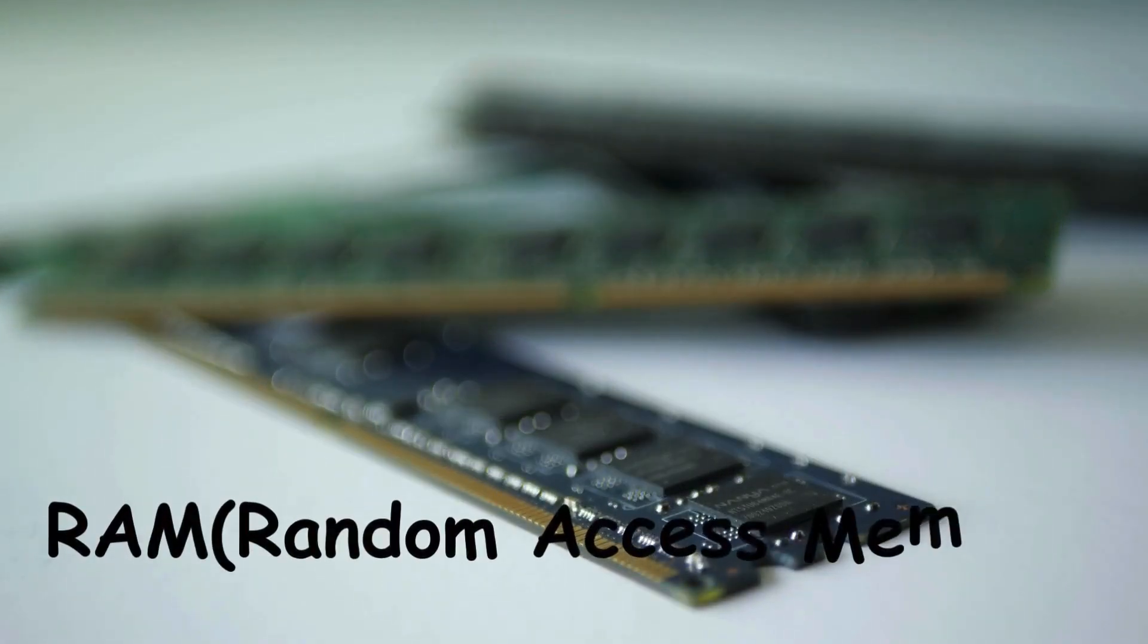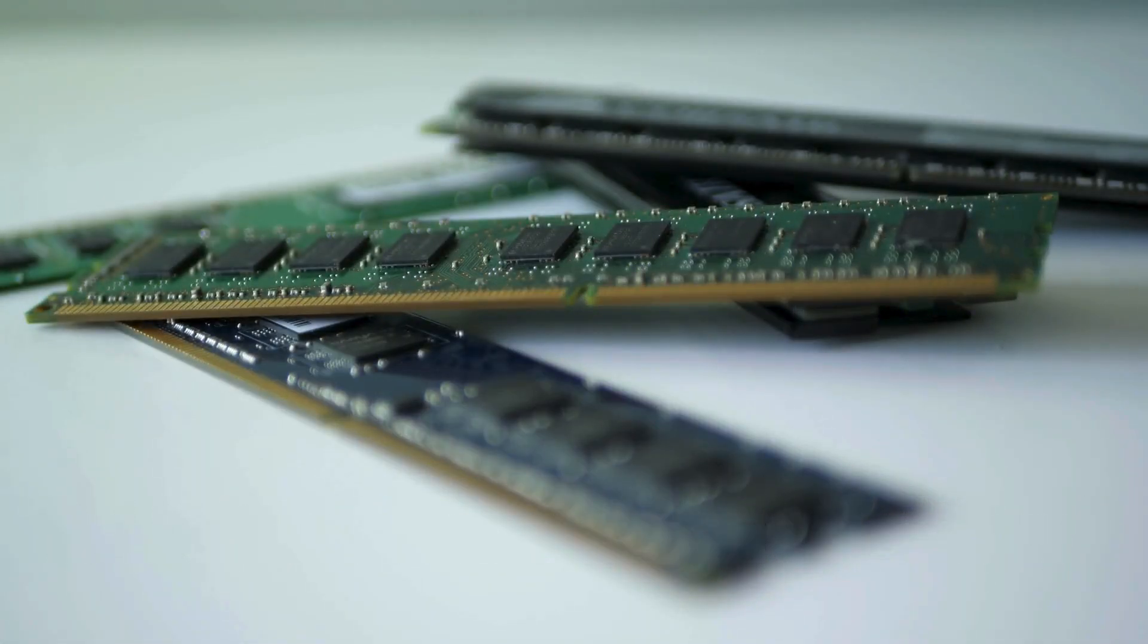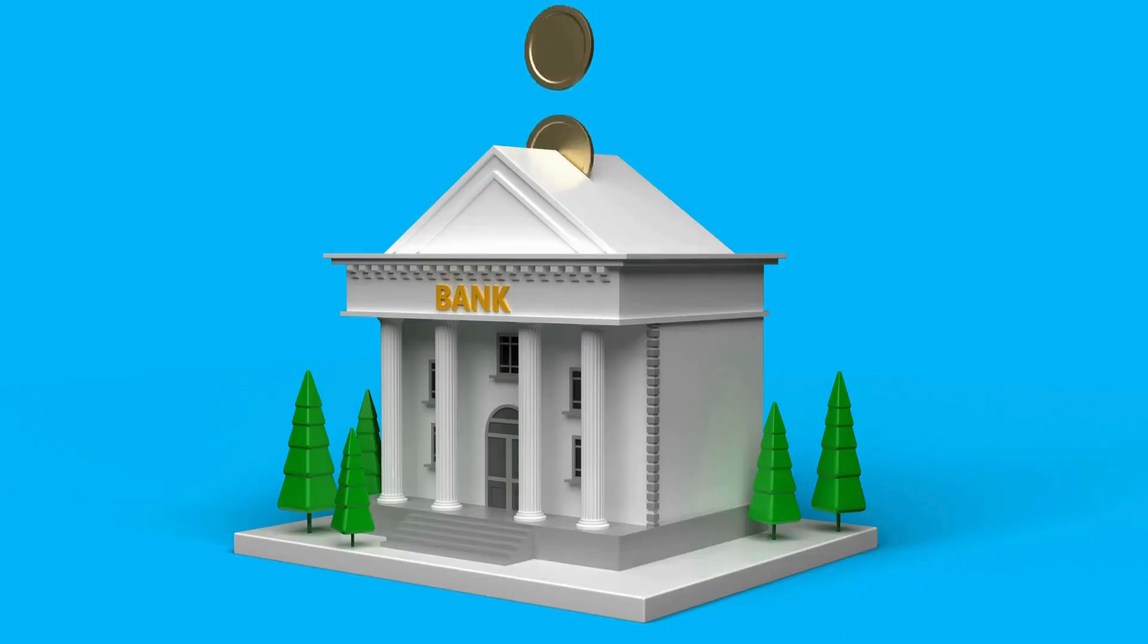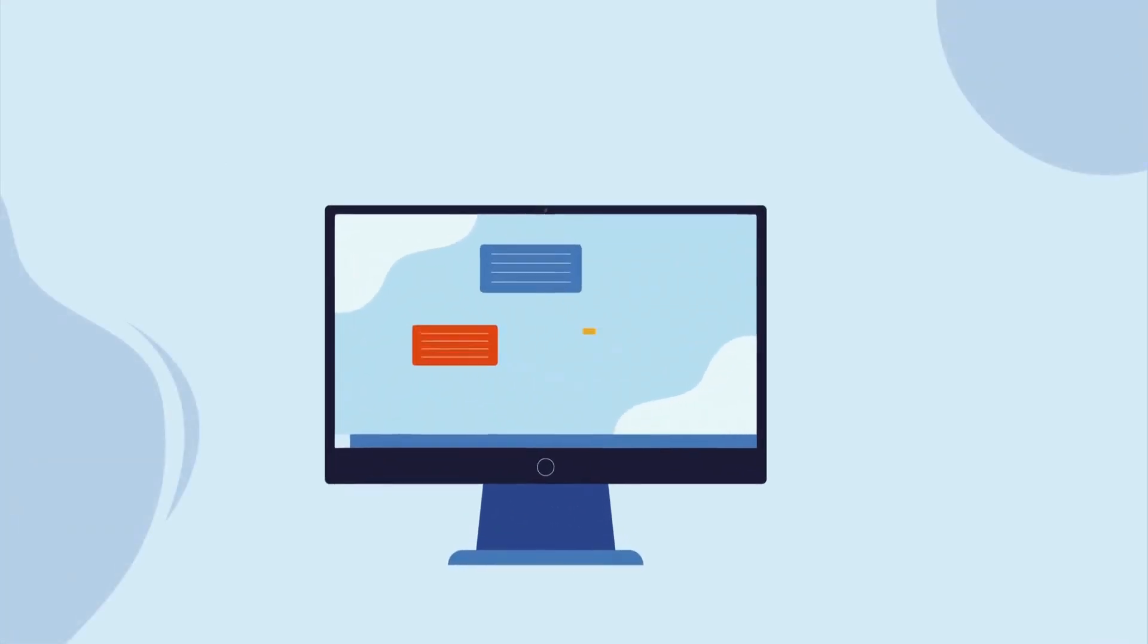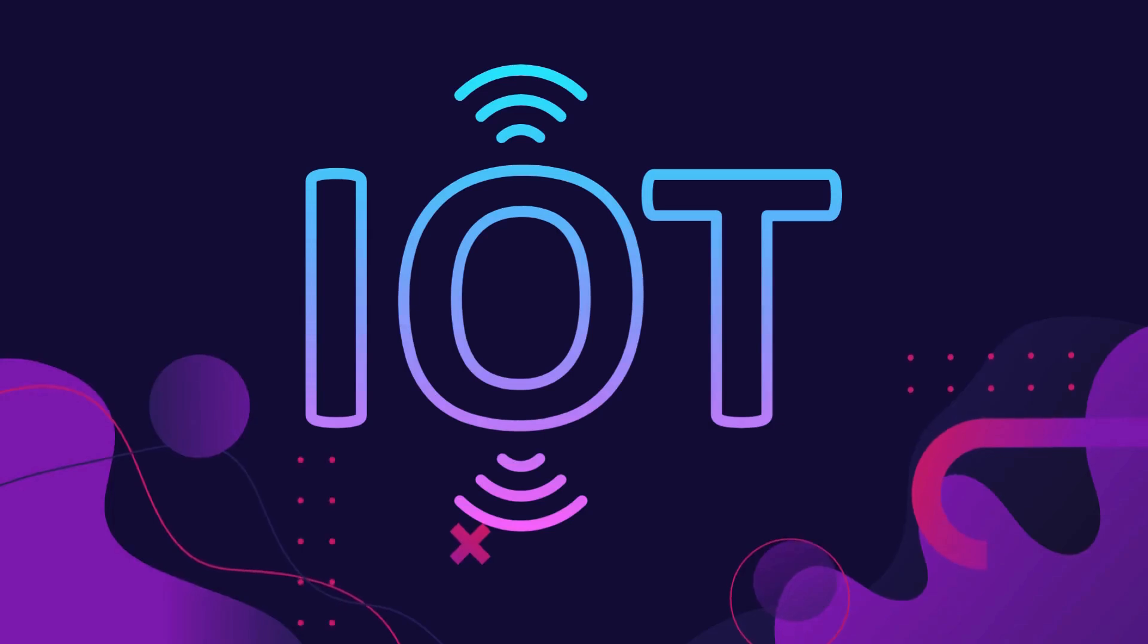Time to learn about RAM. Random access memory. RAM is a short-term memory bank that stores data needed to run applications and open files. It's a fundamental component of computing devices, including desktops, tablets, smartphones, and IoT devices.